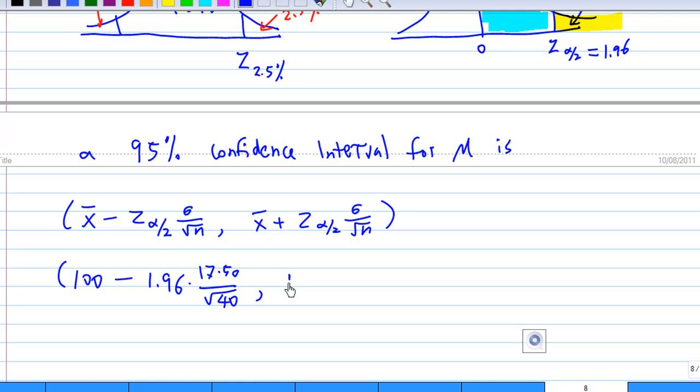So the interval is 100 - 1.96 × (17.50/√40) to 100 + 1.96 × (17.50/√40). Now we press the calculator, which gives 94.58 to 105.42, and that is a 95% confidence interval for μ. That means we are 95% sure that μ will fall inside this interval.